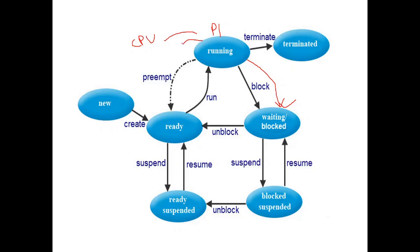Process P1 will be moved to the waiting state. When P1 moves to the waiting state, the CPU becomes free. When the CPU is free, another process waiting in the ready state will be assigned to the CPU. Now process P2 can be selected by the CPU and it will execute until process P1 finishes using the printer.